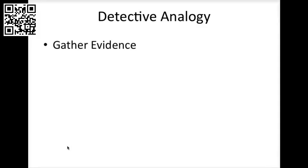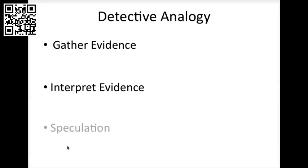At the first level, we will simply gather evidence by listing and describing concrete pieces of information from the image. At the second level, we will interpret evidence and use the information gathered at level one to prove our interpretations. Third, we will speculate about the image, thinking about the author's claim, bias, and perspective.